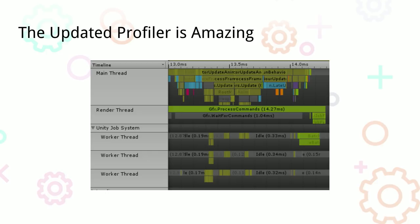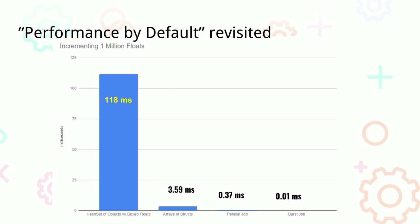Recall incrementing one million floats: we had 118 milliseconds with references — way too long for a 16ms frame — and 3.59 milliseconds iterating through them as structs. Offloading to cores, it jumped down to 0.37 milliseconds — about eight times faster depending on your core count. There's also burst compilation, which makes assumptions about your for loops and data processing, cutting out extra CPU work. With burst, we got down to 0.01 milliseconds — there's basically no bar on the graph. That's with all safety checks turned off. It just goes fast.